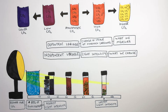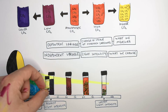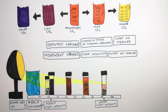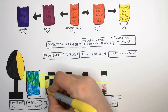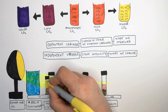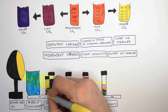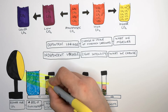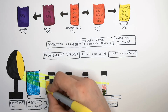Now we're going to see what happened in the control where there has been no light. Inside this flask there's been no photosynthesis. Instead, respiration has been taking place because there's been no light for photosynthesis. That means it's going to absorb oxygen from the solution and put more carbon dioxide into the solution, turning the hydrogen carbonate indicator yellow.